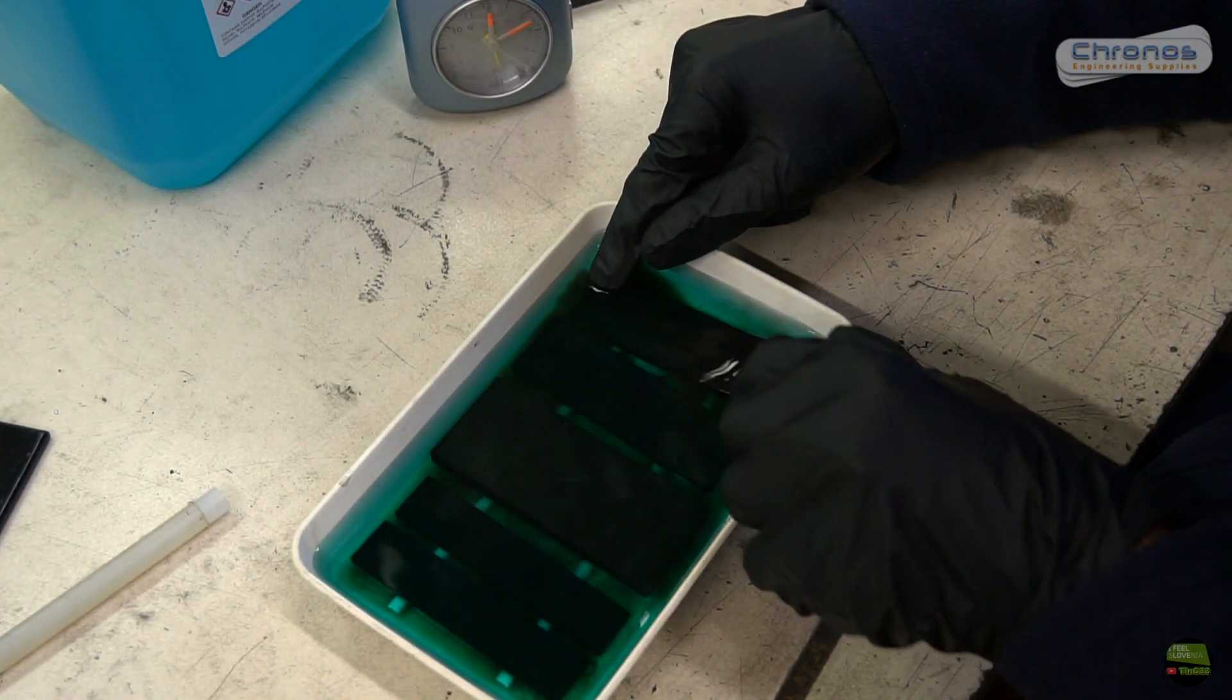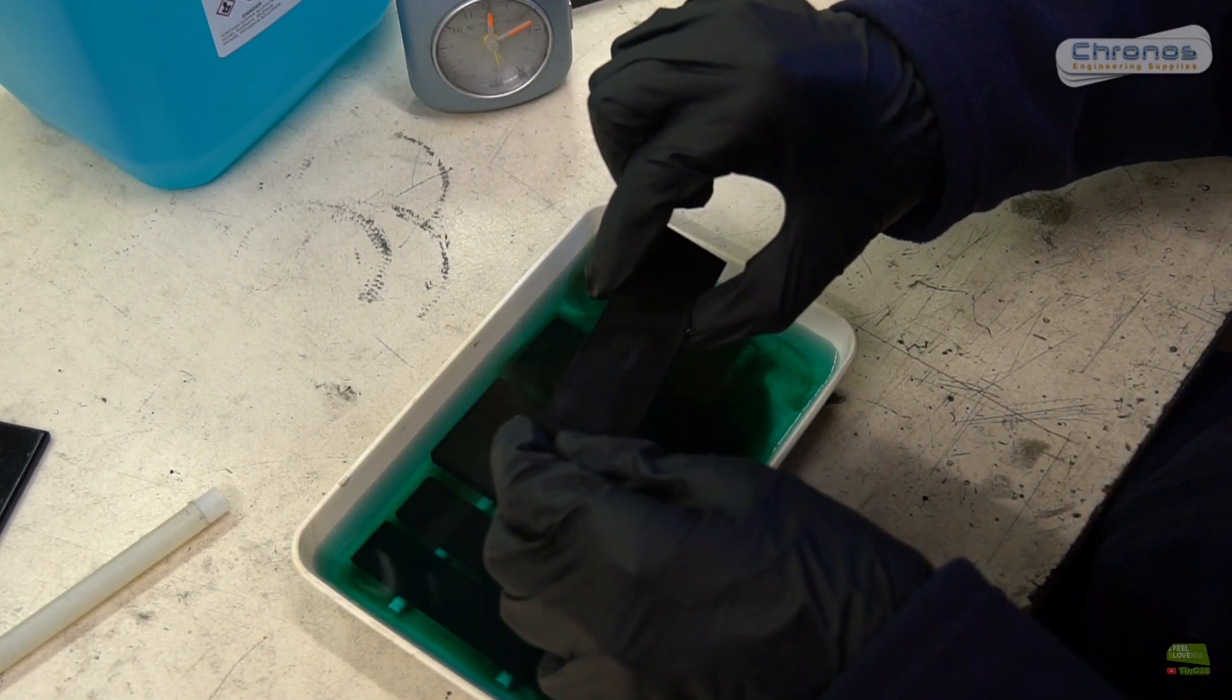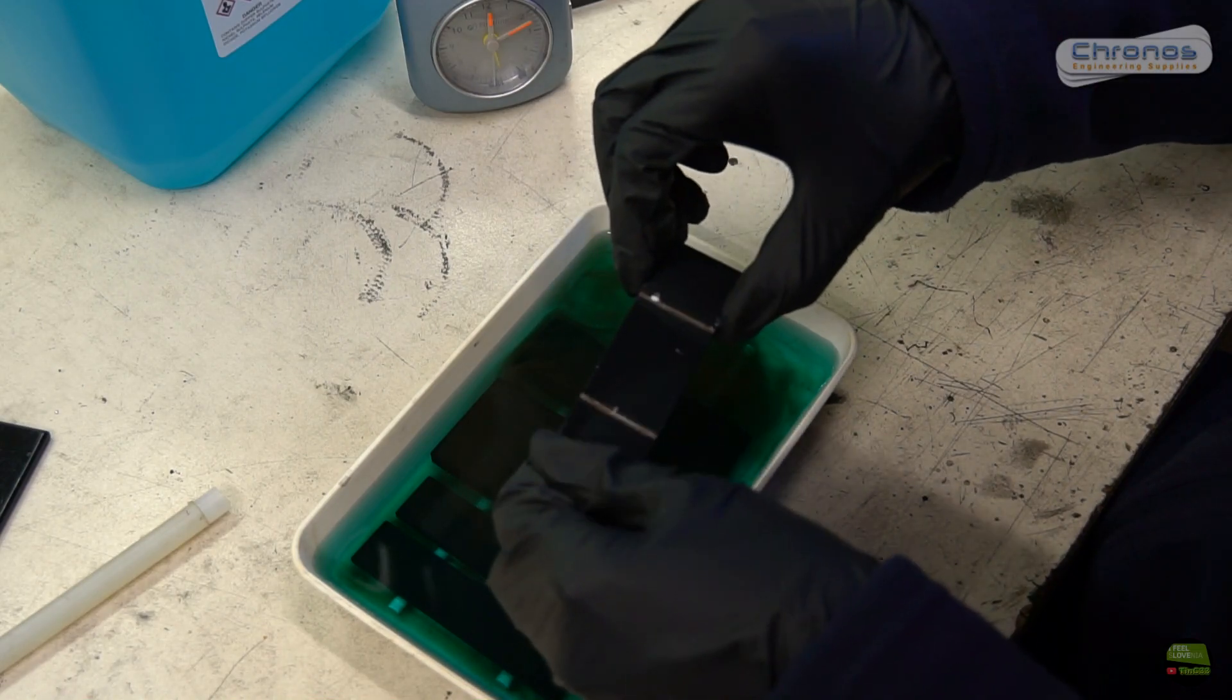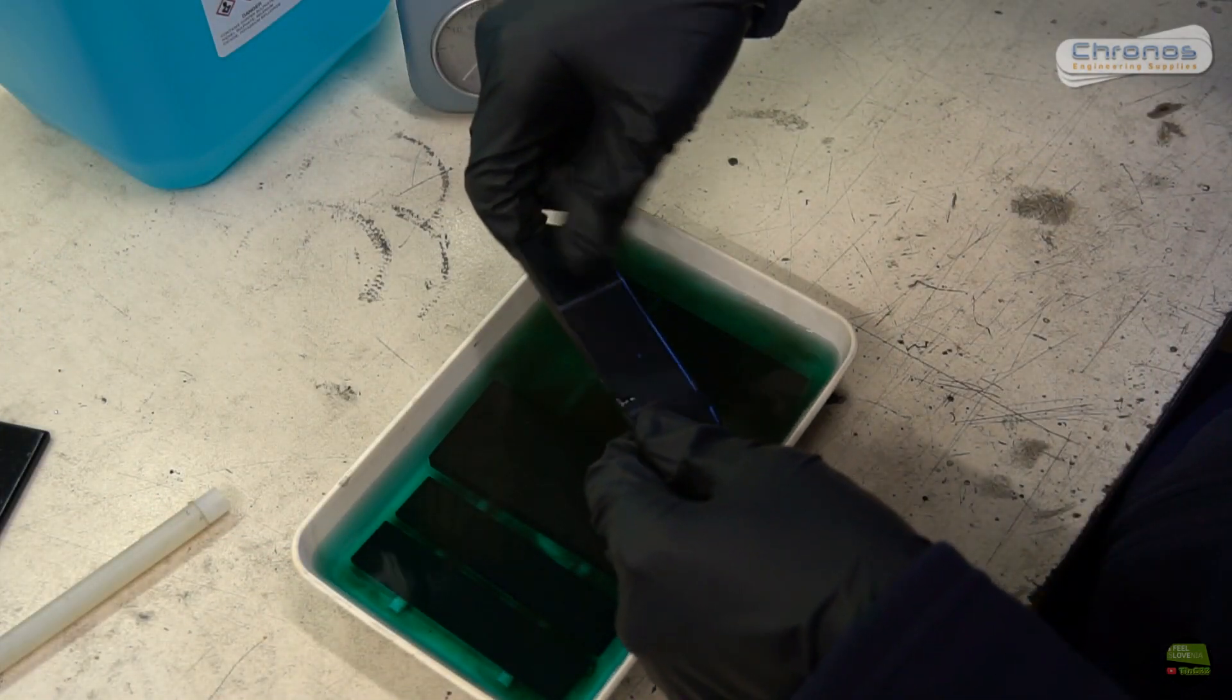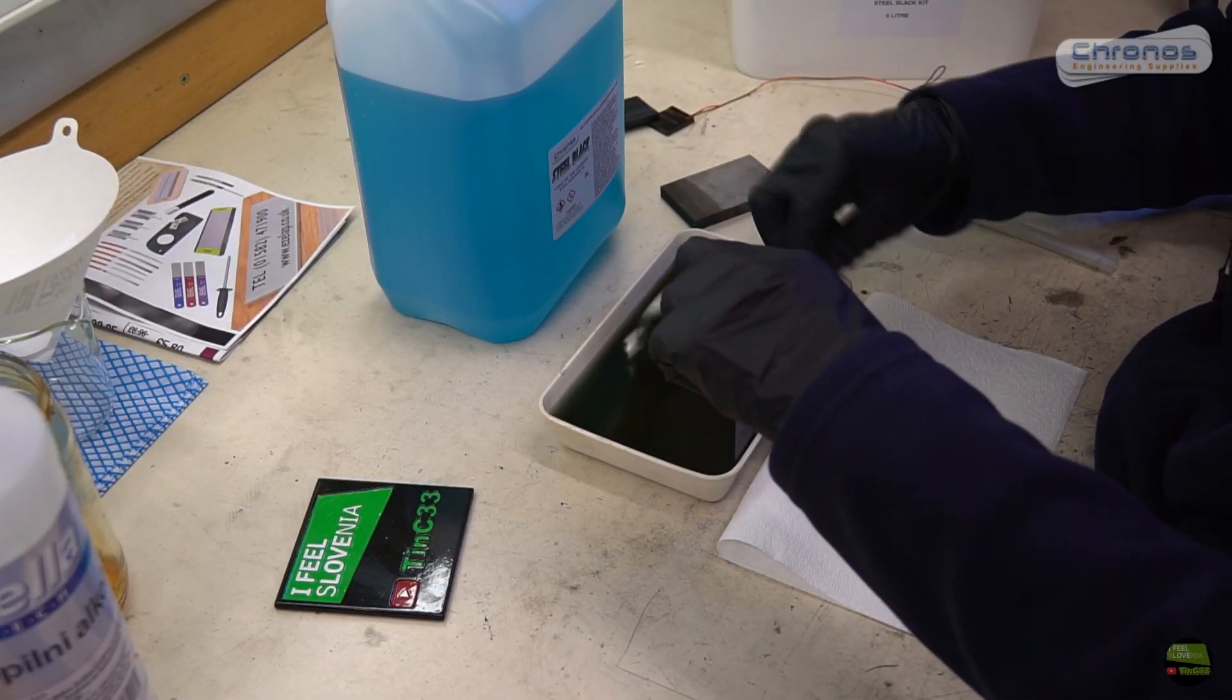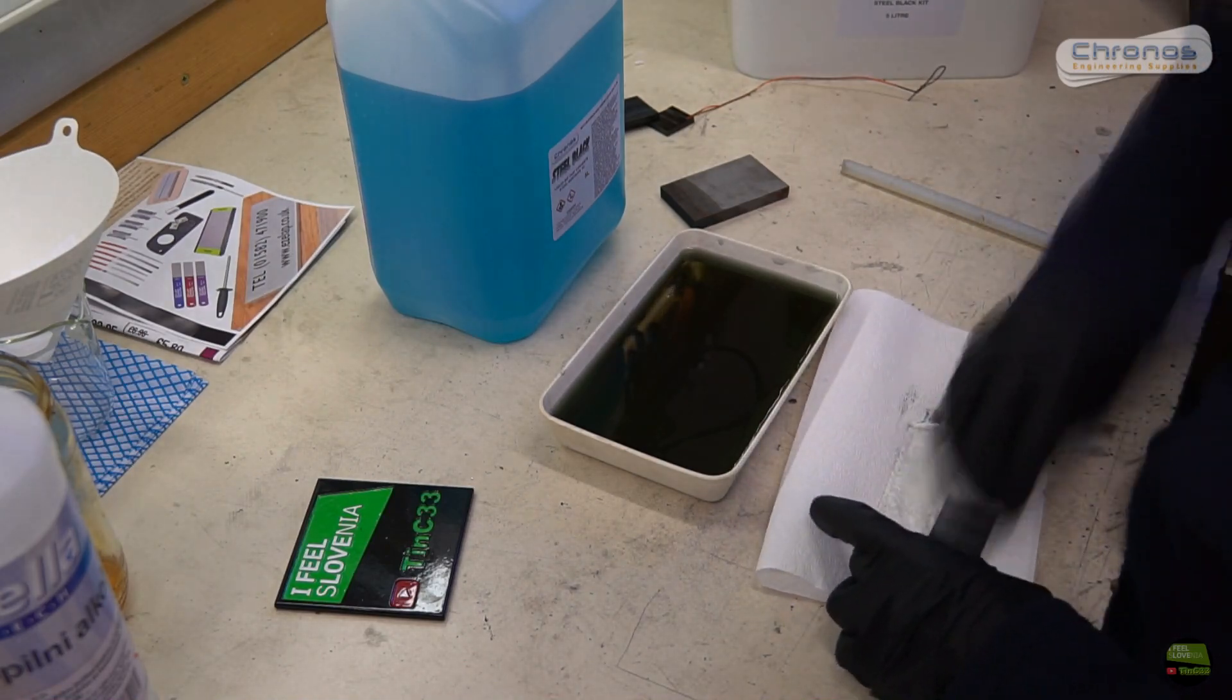After ten minutes the pieces become black and we can see also the solution becomes darker. I wanted to lift pieces from the container bottom so I used two plastic sticks under, but that was a mistake. Traces are much more visible than if we drop pieces directly to the bottom. So I turn the pieces around and leave them for ten more minutes. After about twenty minutes the solution became completely black, so I take pieces out and wipe them.